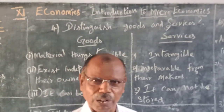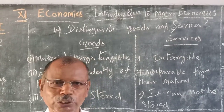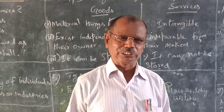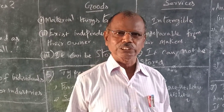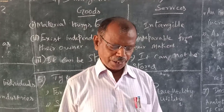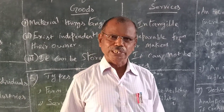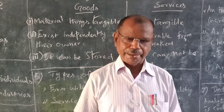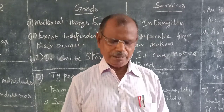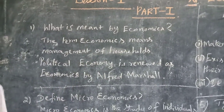Good morning, level students. Now we are going to study chapter one, lesson one: introduction to microeconomics. Economics is classified into two systems: first, microeconomics; next, macroeconomics. The word economics comes from the ancient Greek word 'oikonomos', where 'oikos' means households and 'nomos' means management, custom, and law. So economics means management of households, custom, and law.